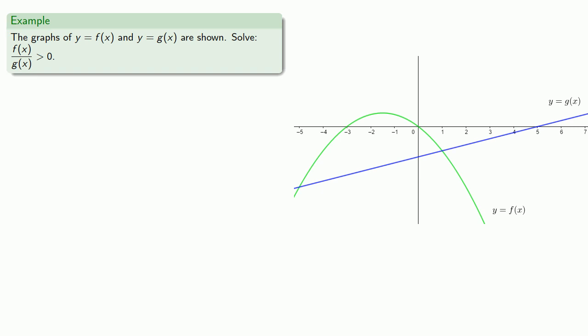We want to find the critical values where our rational expression is either equal to zero or undefined. Since it's a quotient, the only times a quotient will be zero is when the numerator is zero. So we want to know when f of x is equal to zero.